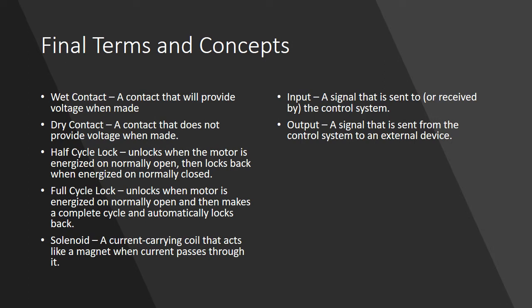There are other terms such as wet contact and dry contact. A wet contact is a relay contact which provides voltage at all times or whenever the contact is made. A dry contact is a contact that does not provide voltage until the relay is activated.